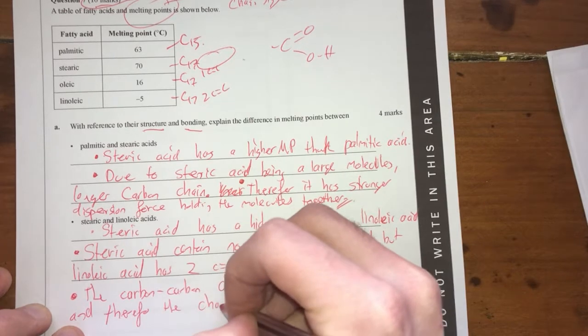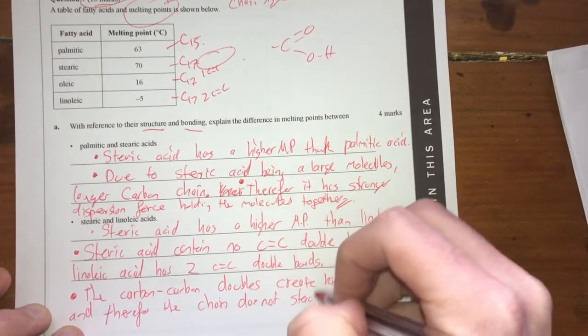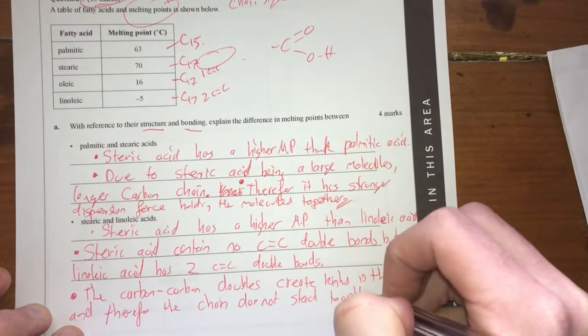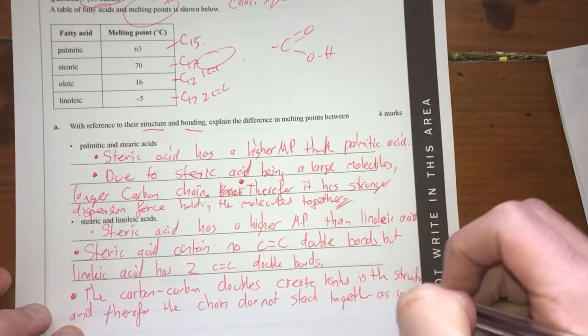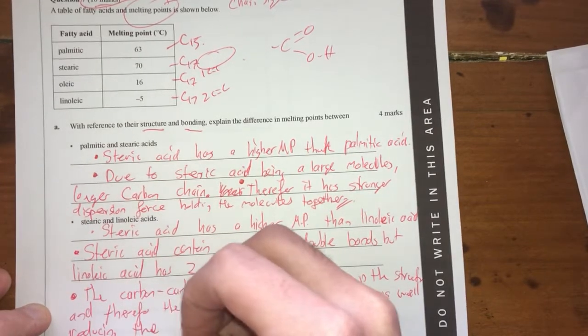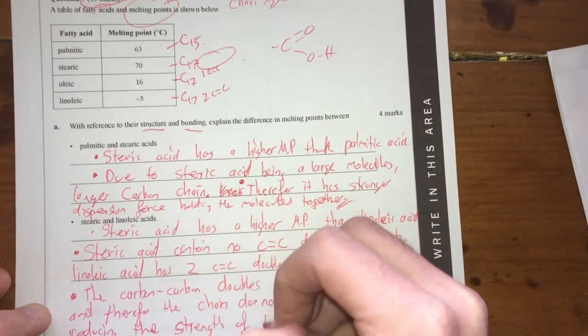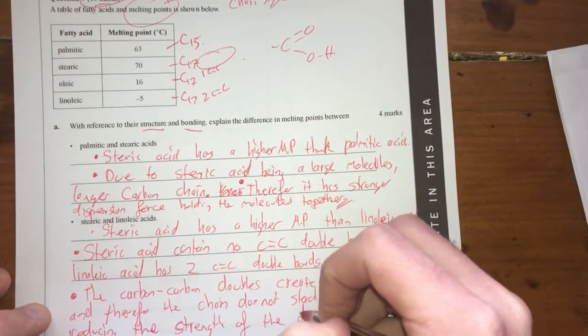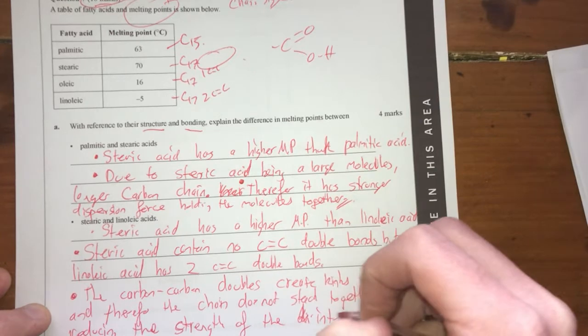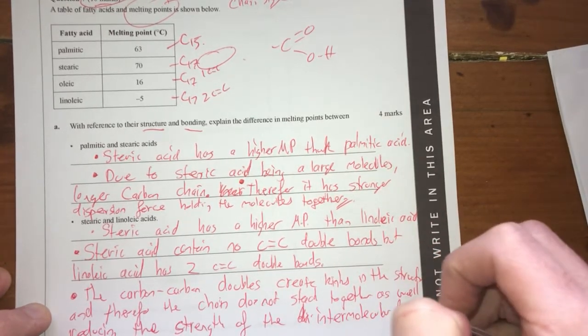The carbon-to-carbon double bonds create kinks in the structure, and therefore, the chains do not stack together as well, reducing the strength of the intermolecular forces. This really is dispersion forces.